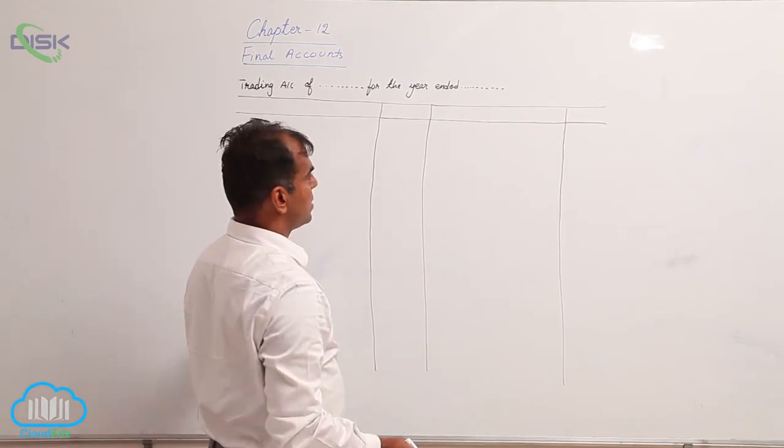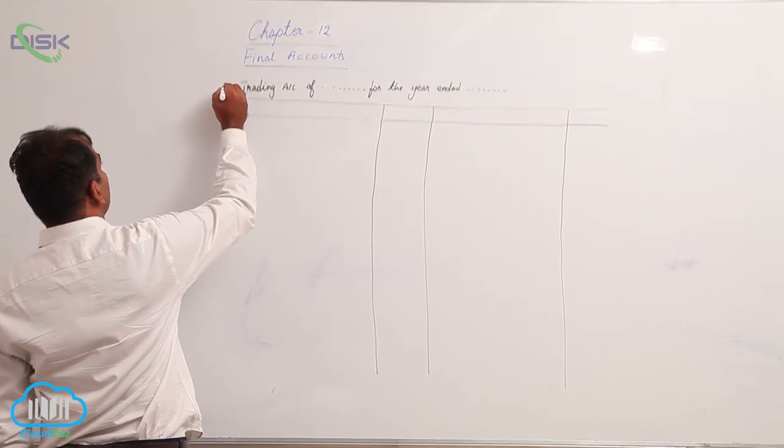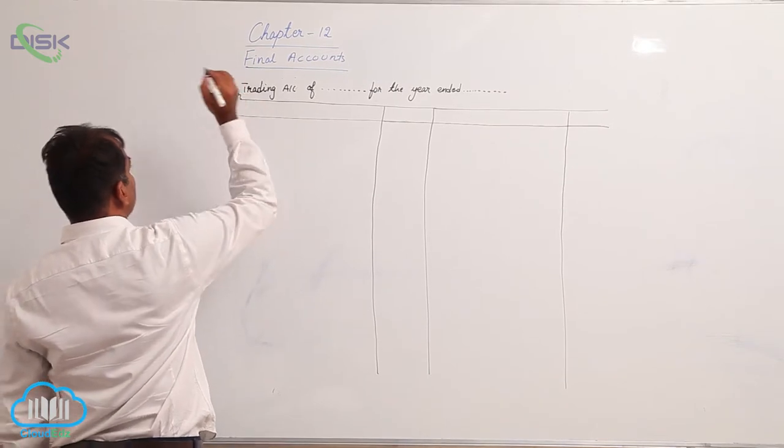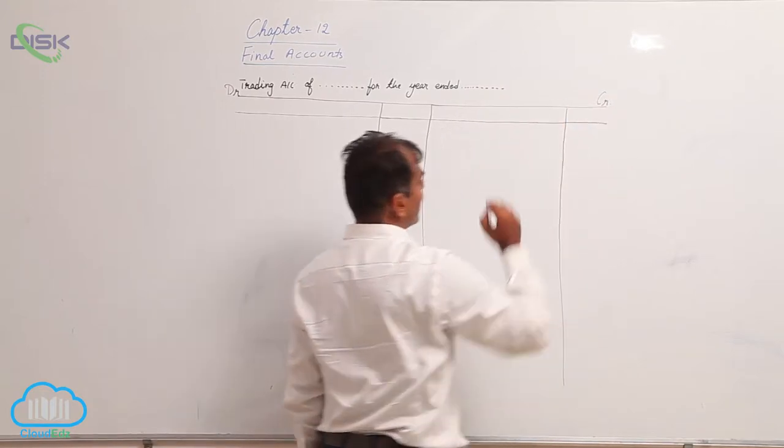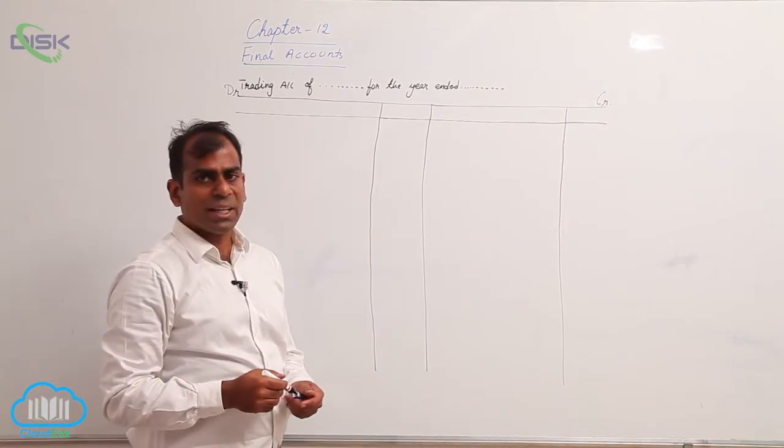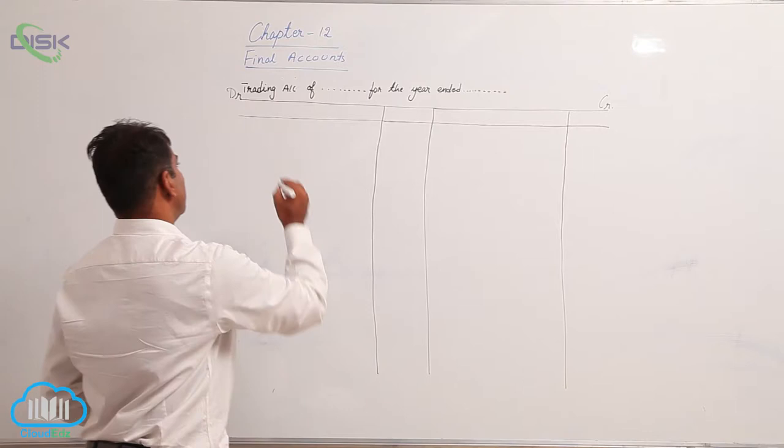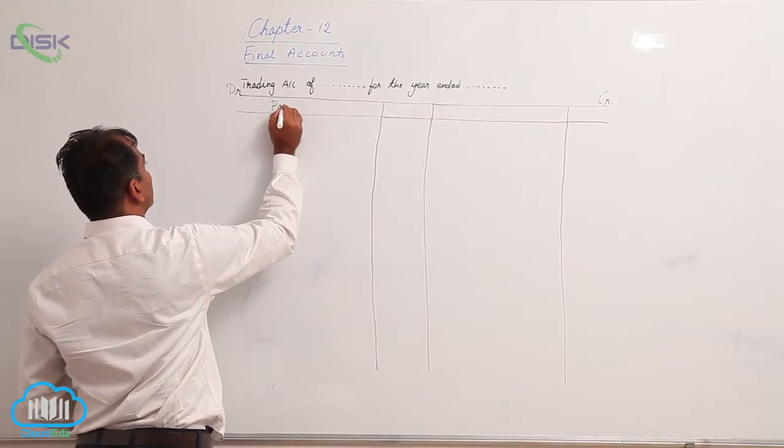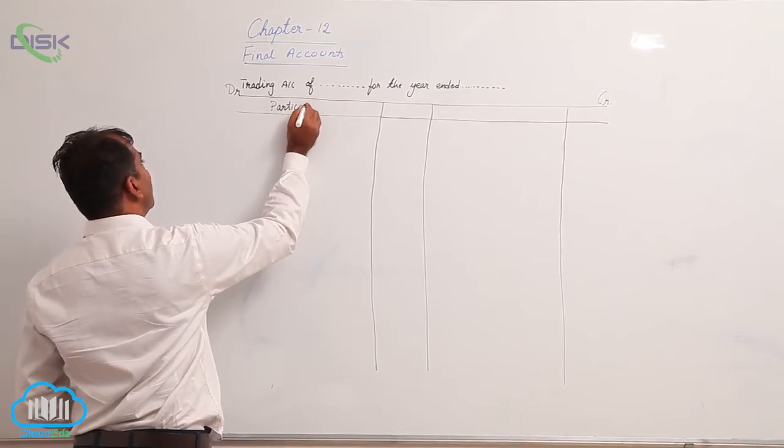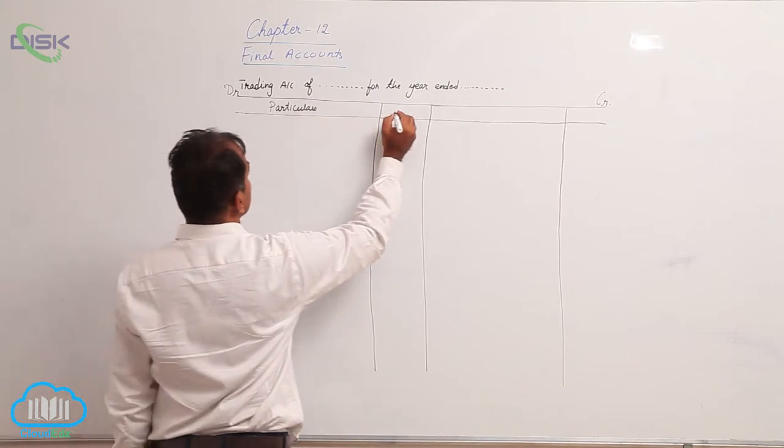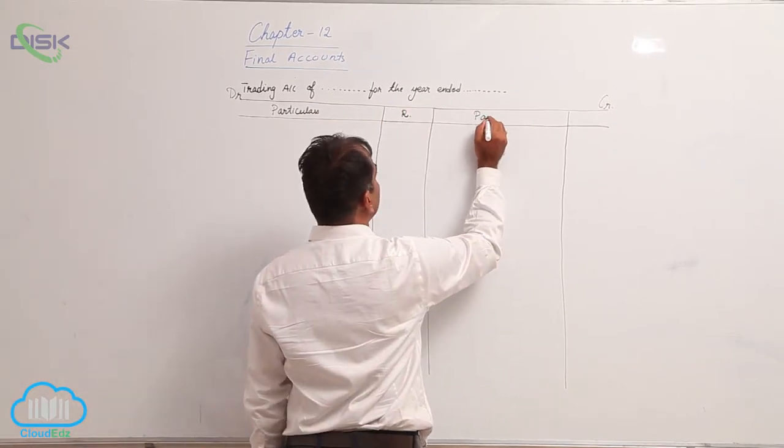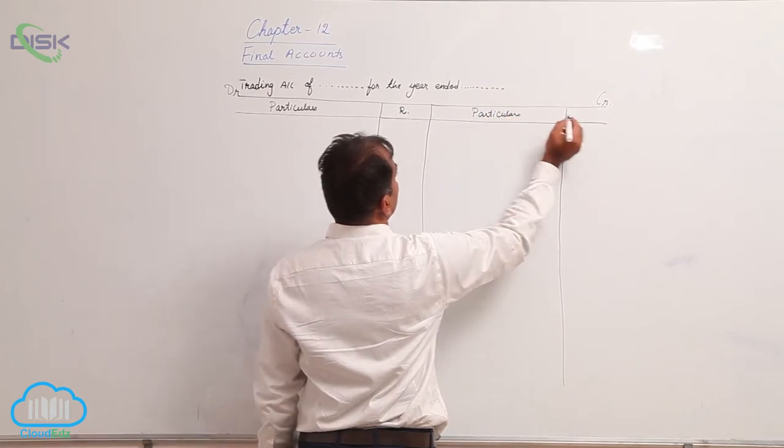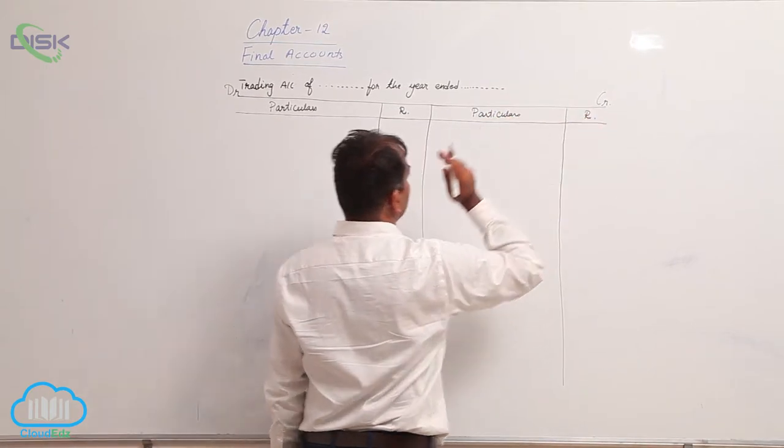As usual, you know the left-hand side is debit and the right-hand side is credit. If you see, this is particulars and this is amount, then again particulars, amount.